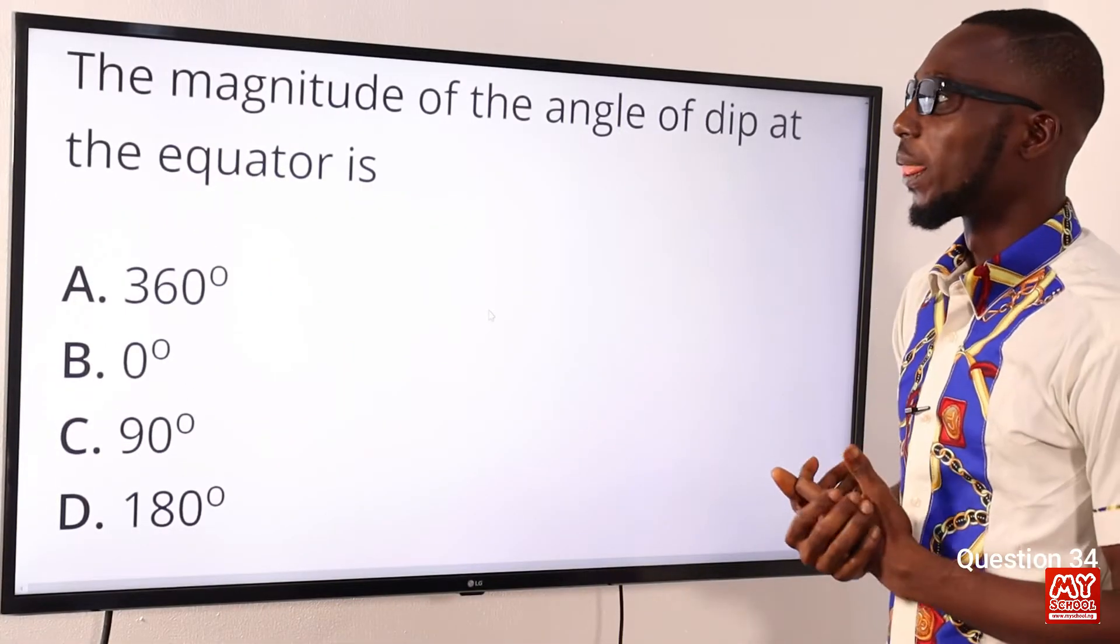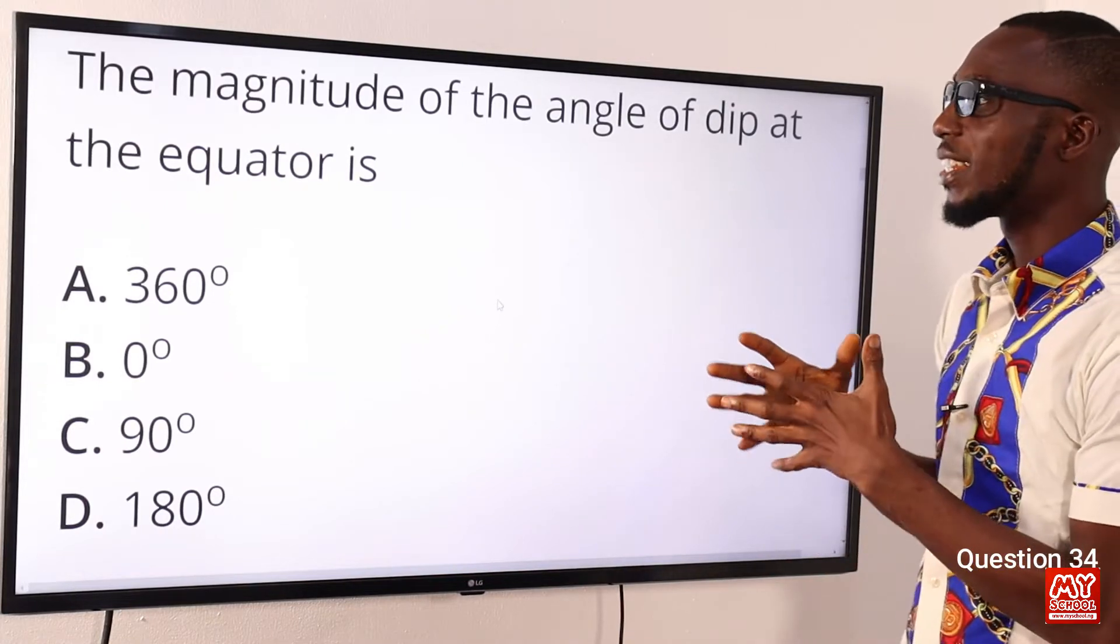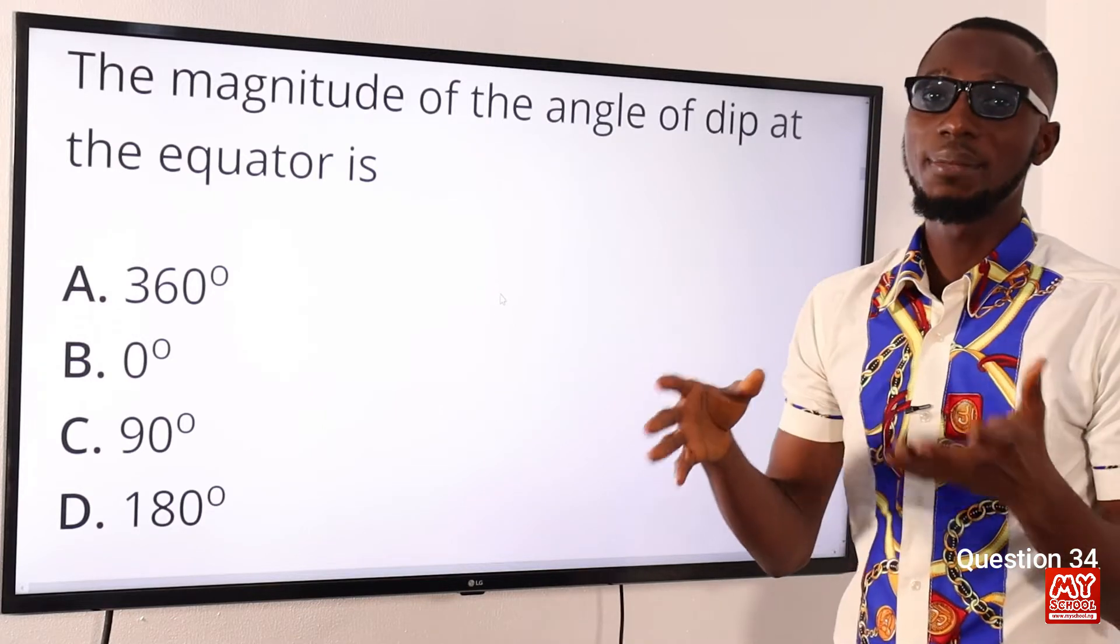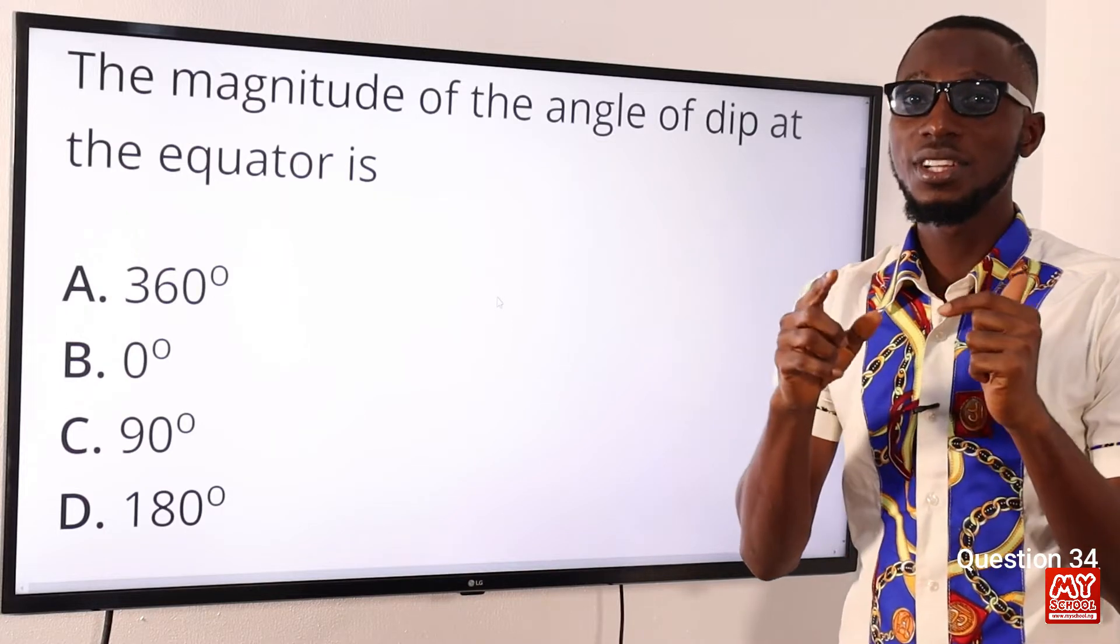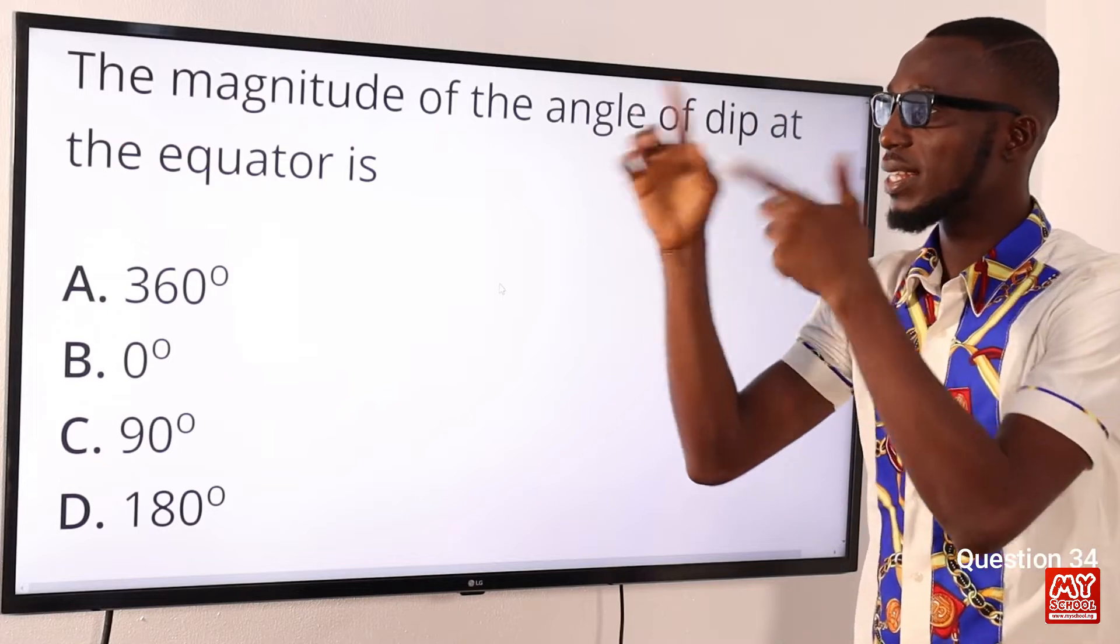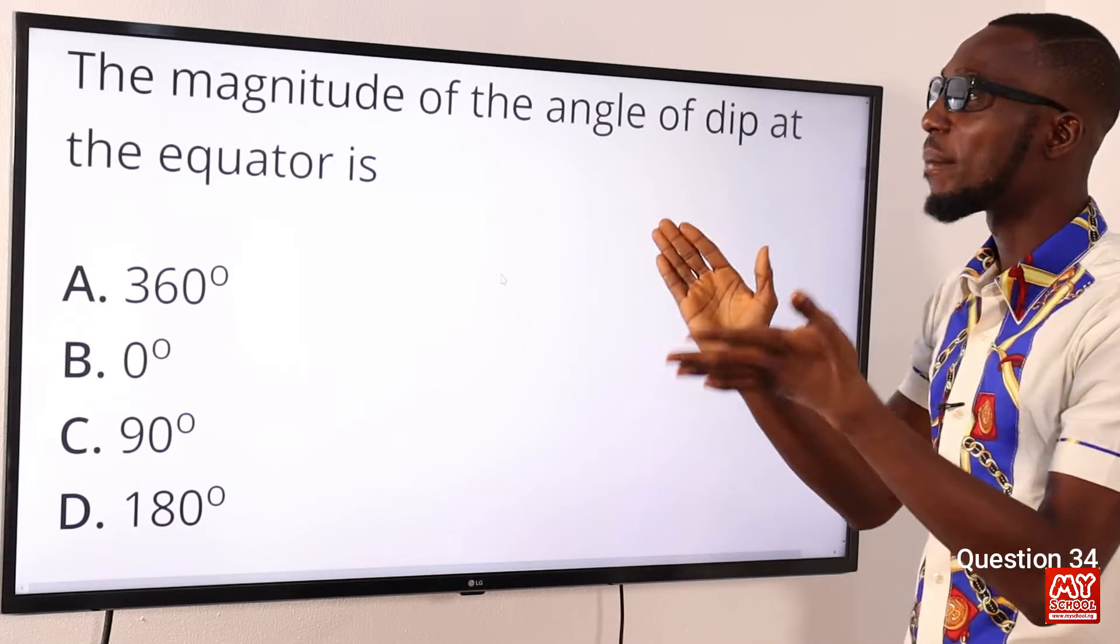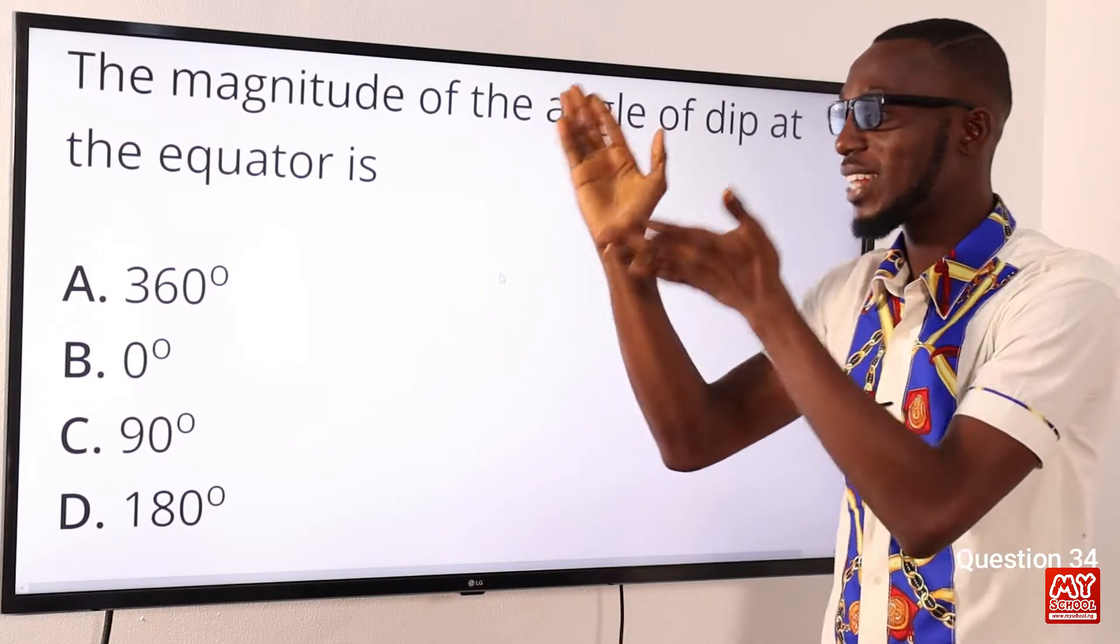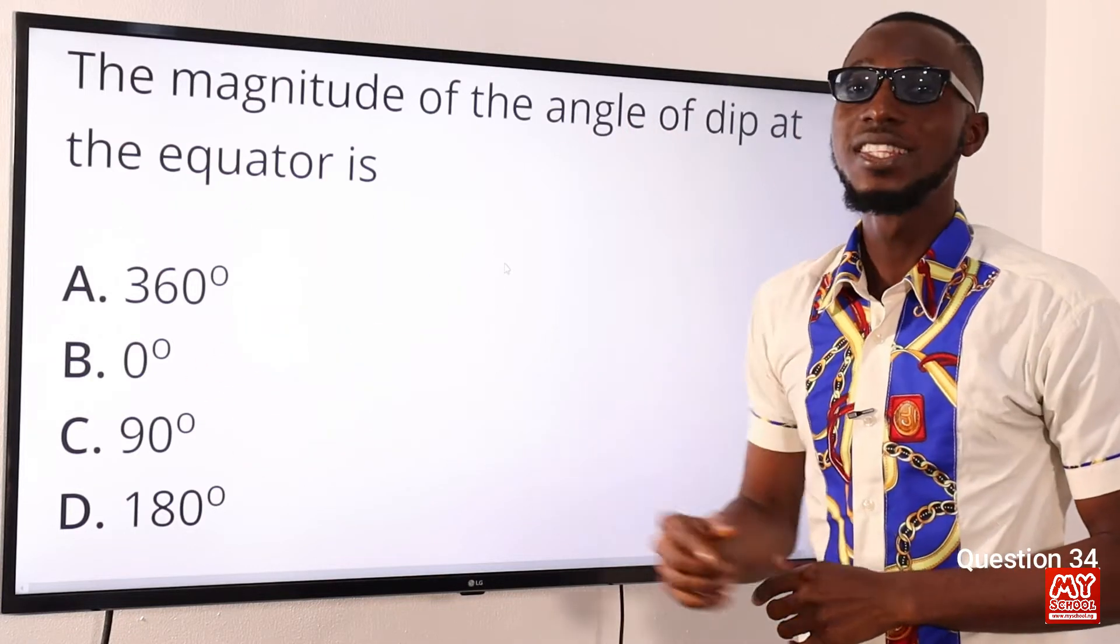Question 34. The magnitude of the angle of dip at the equator is what? It is zero degrees. Now, we are talking about the magnetic elements, angle of dip is one of it. So, at the magnetic equator, it is zero degrees. It varies all over the Earth's surface from zero degrees at the magnetic equator to 90 degrees at the magnetic pole. So, we are talking about the angle of dip at the magnetic equator. So, it is definitely zero degrees. The correct option is option B for zero degrees.